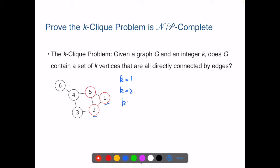When k is 3, we know vertices 1, 2, and 5 form a 3-clique. In this clique, all 3 nodes are directly